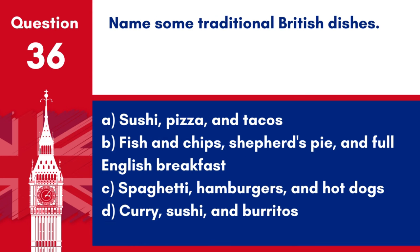Question 36. Name some traditional British dishes. A. Fish and chips, shepherd's pie and full English breakfast. B. Spaghetti, hamburgers and hot dogs. C. Curry, sushi and burritos. Answer: A. Fish and chips, shepherd's pie and full English breakfast. Traditional British dishes include fish and chips, shepherd's pie and full English breakfast.